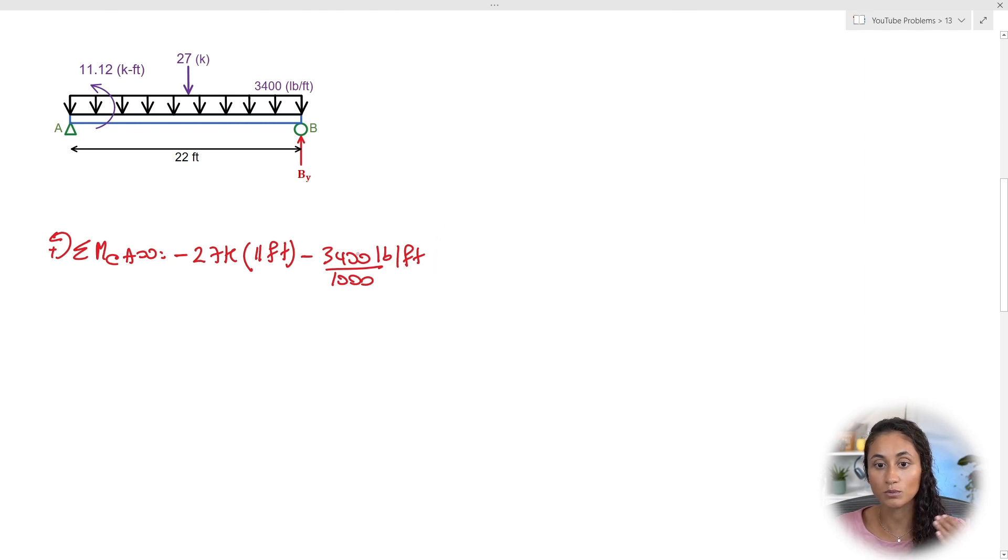The next thing we need to do is multiply the distributed load by two lengths because here we have per foot. So we need to multiply it by another length to get rid of the foot and then another length to have kips·foot because that's the unit of moment, right?